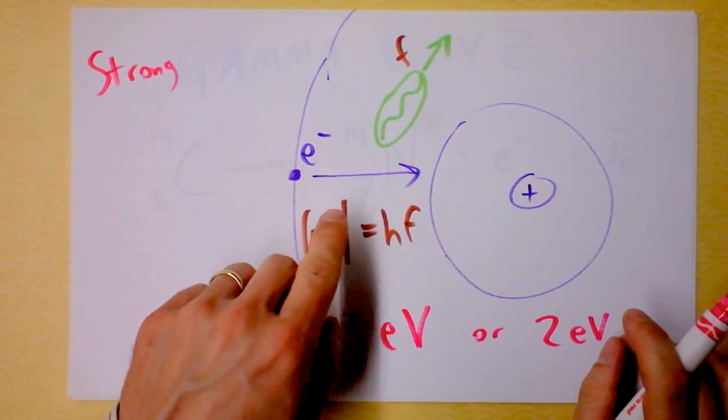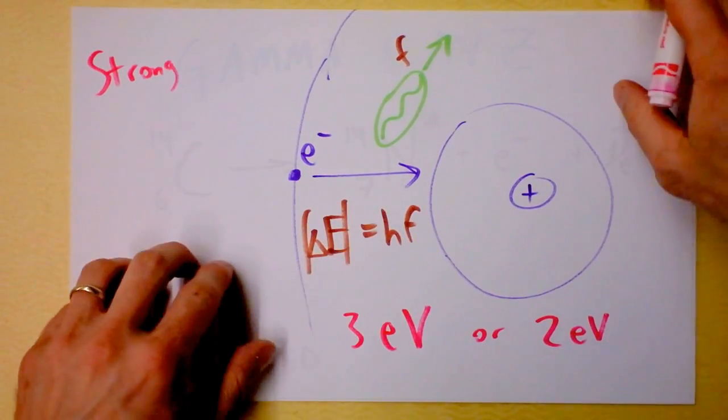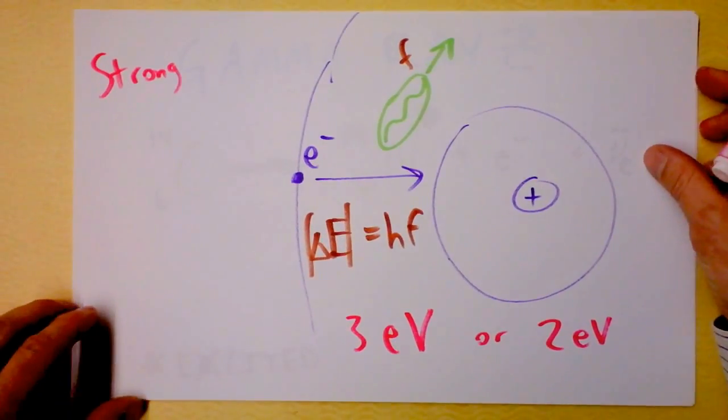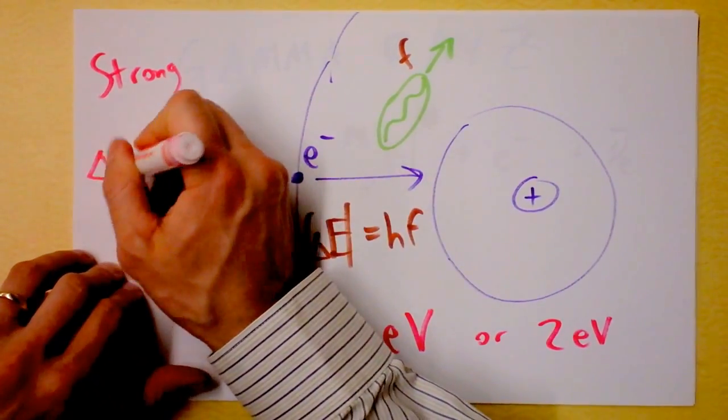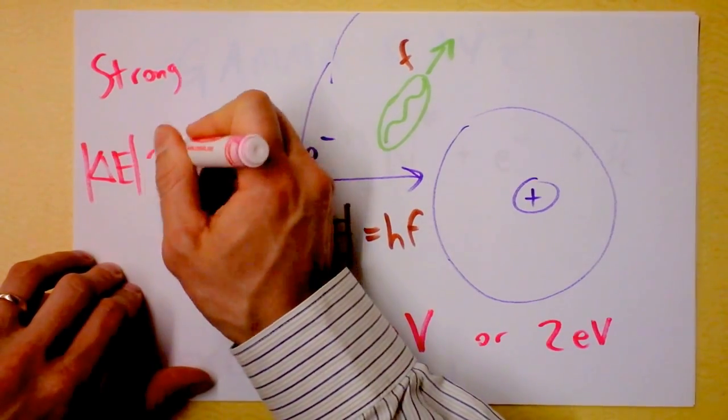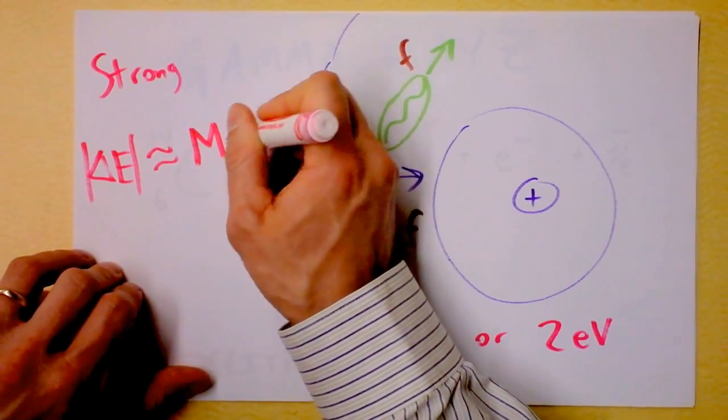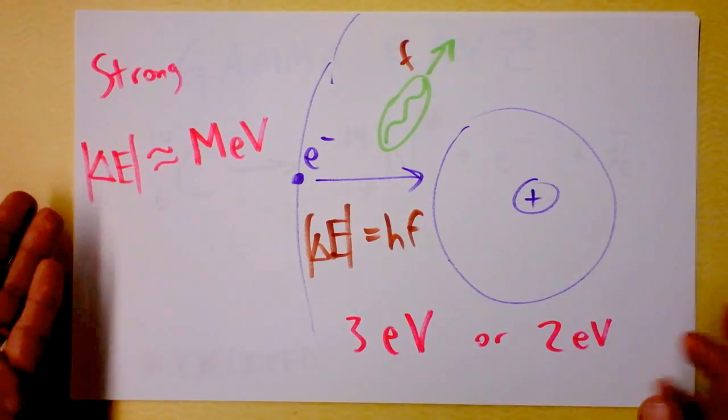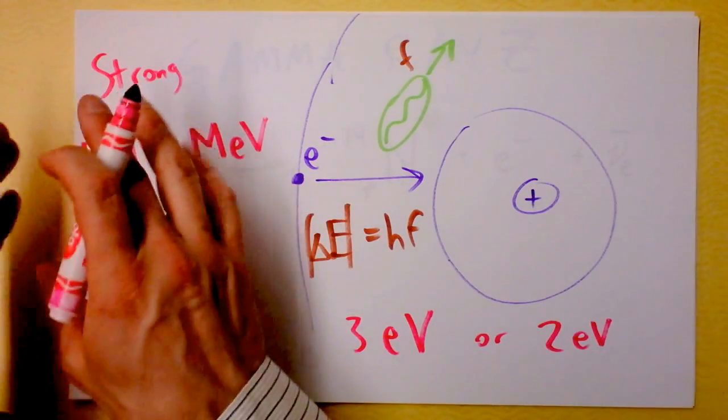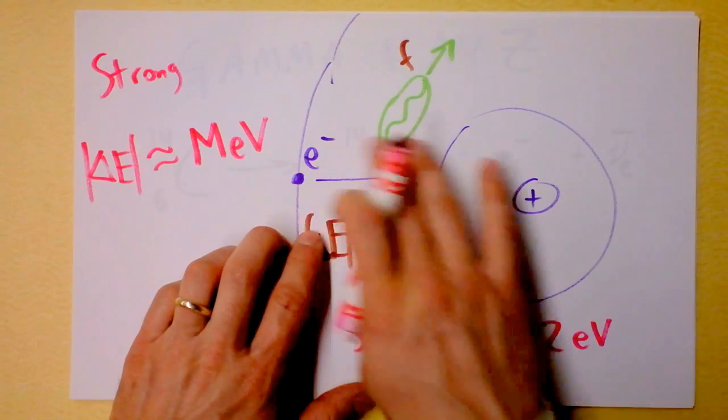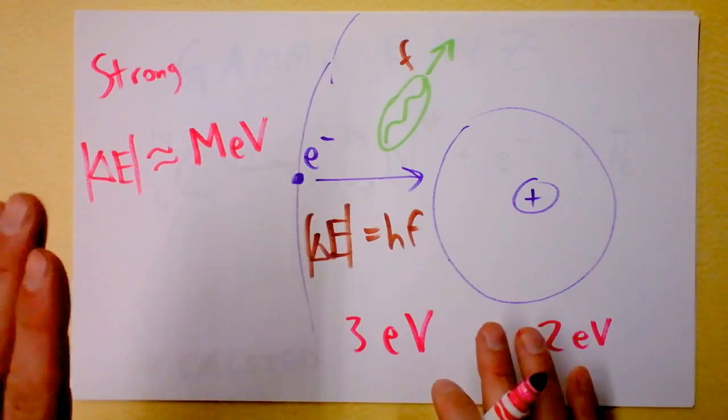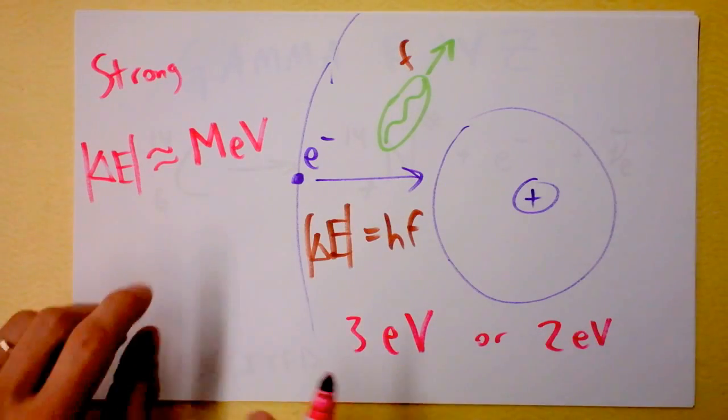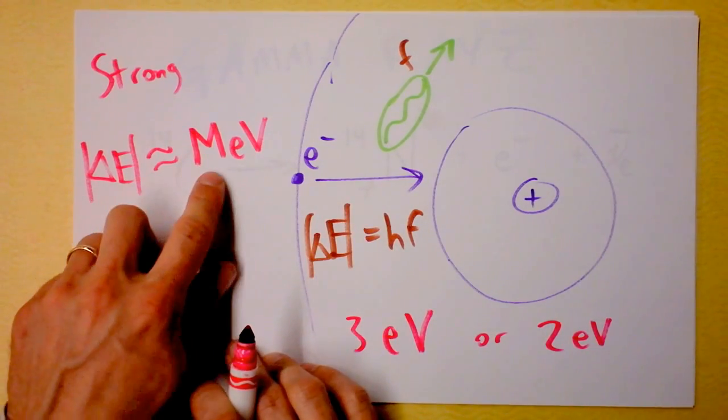When we're talking about the energy of light that can come out from the relaxation of an excited nucleus, the strong force means that these energies are going to be on the order of millions of electron volts or at least hundreds of thousands of electron volts because this force is so much stronger than the electrostatic force that's governing this interaction right here. The strong force means that nuclear transitions between states are huge energy transitions.